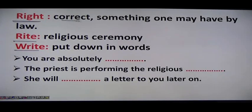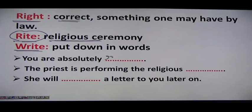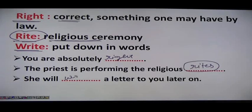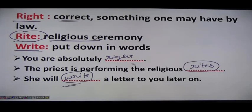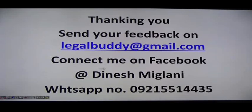Finally: 'right,' 'rite,' and 'write.' Right (R-I-G-H-T) means correct. Rite (R-I-T-E) means a religious ceremony. Write (W-R-I-T-E) means to put words down on paper. Example: 'You are absolutely right' — correct. 'The priest is performing the religious rites' — ceremonies. 'She will write a letter' — put words down. Although the pronunciation is the same when speaking, the spelling and usage differ.